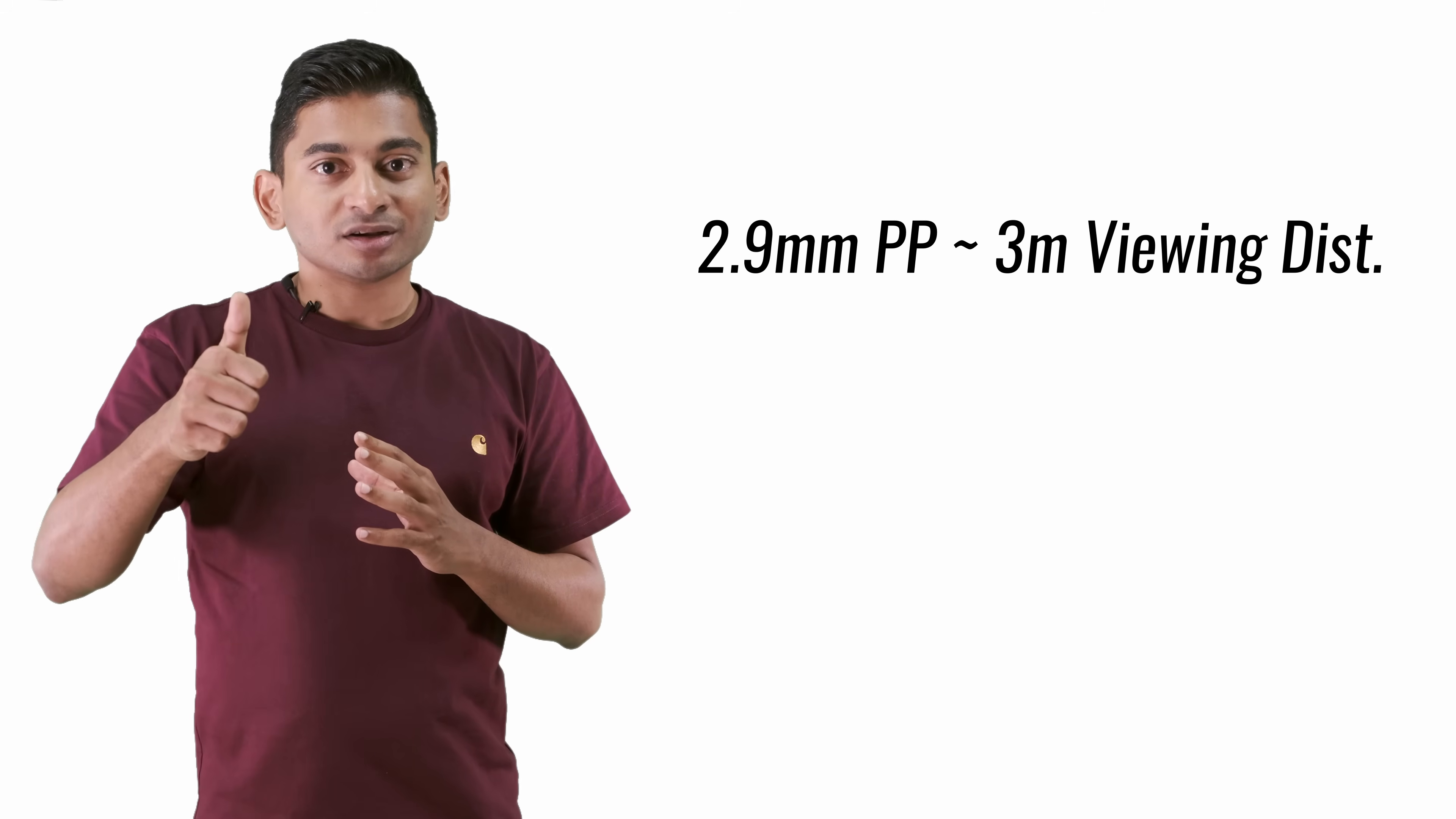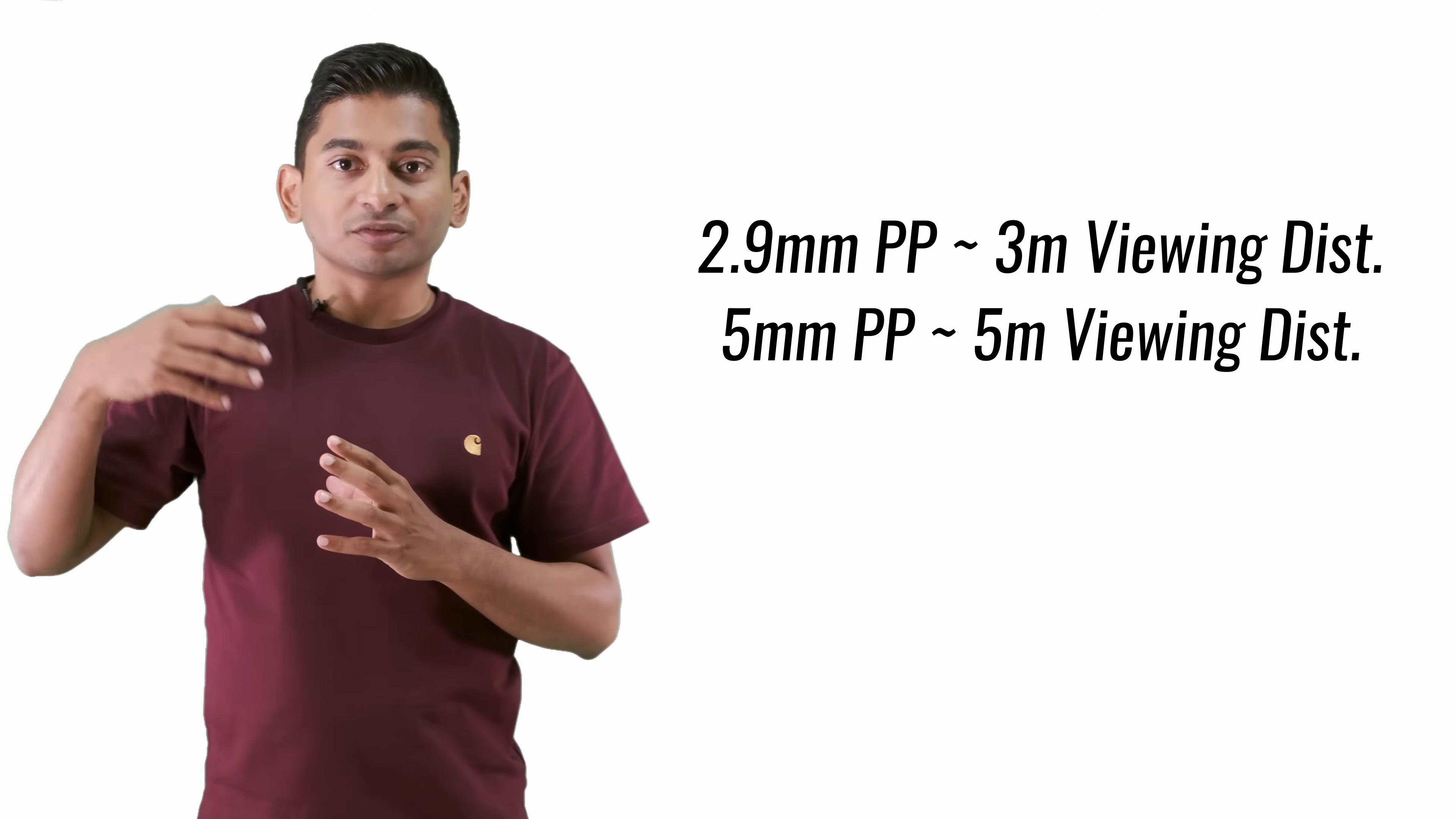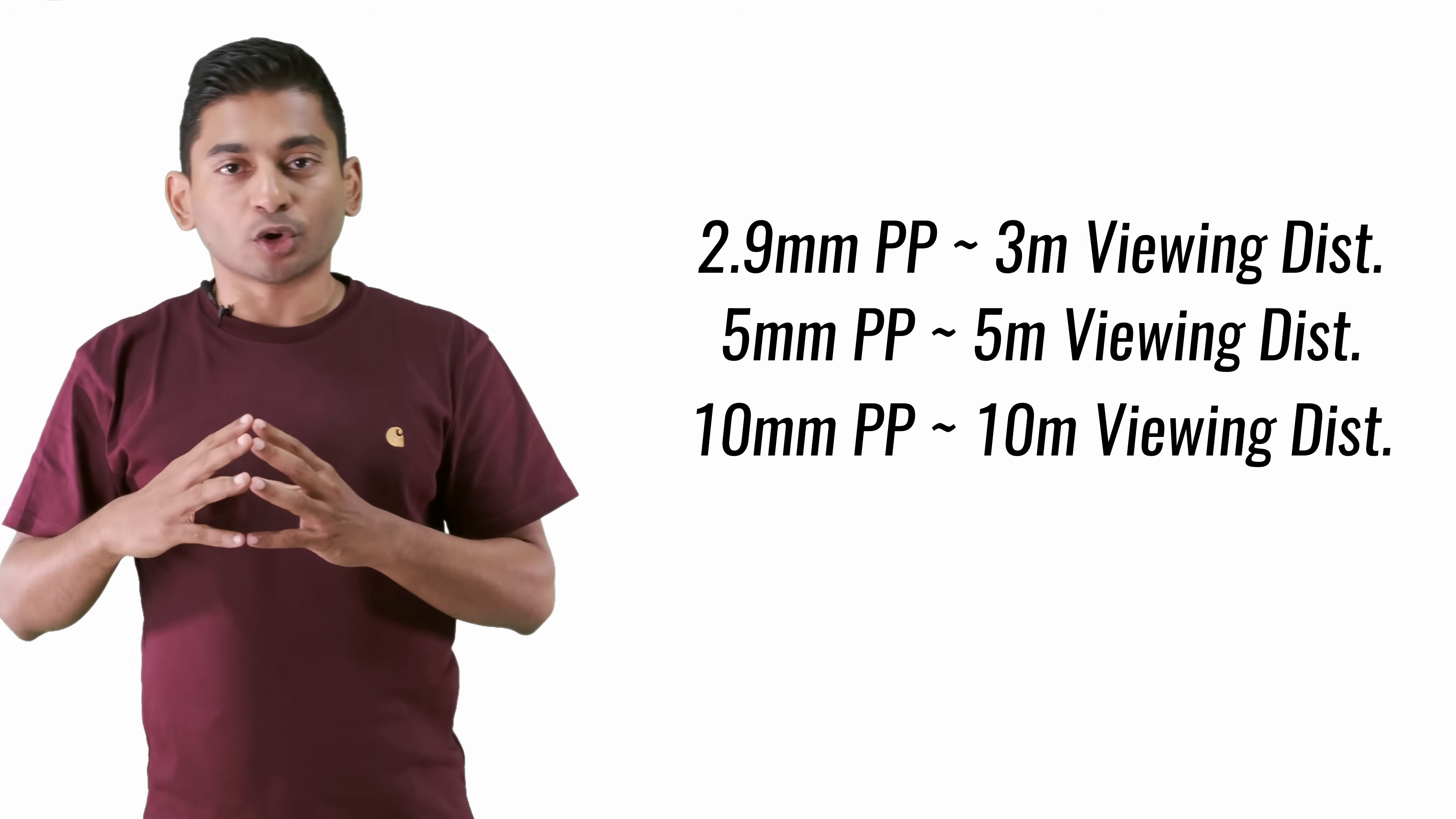That's generally the rule of thumb with pixel pitch when it comes to viewing distance. With 2.9 or 3.0 millimeters, it's a three meter ideal viewing distance. If it's a pixel pitch of five millimeters, it's five meter ideal viewing distance, 10 millimeters is 10 meters and above, and so on.